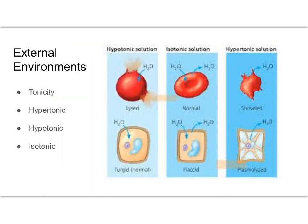Now let's look at different types of environments we could put cells into. Tonicity is the ability of a solution to cause a cell to gain or to lose water — it's based on the solution's ability to make a cell either gain or lose water. You'll hear it in the terms hypertonic, hypotonic, and isotonic, which we talked about in freshman year.